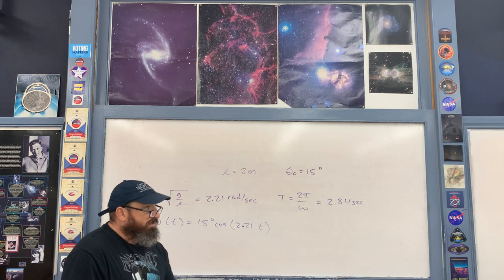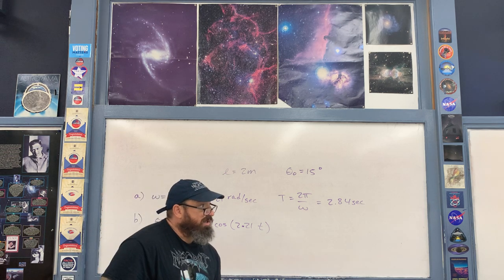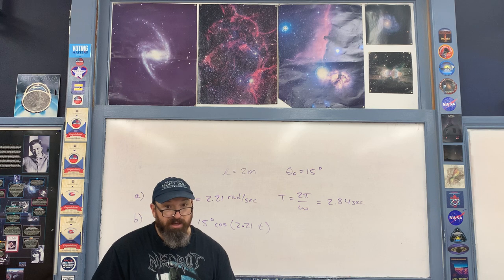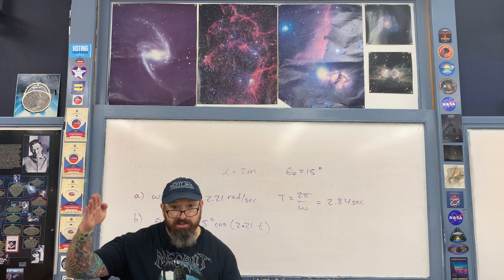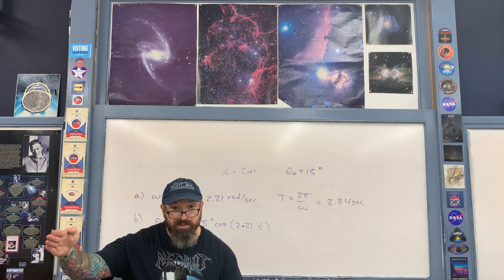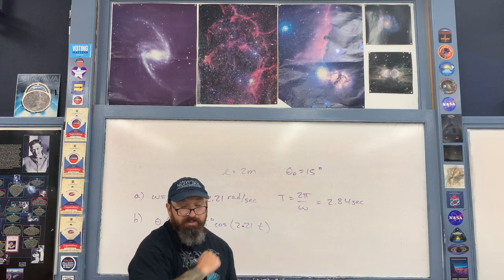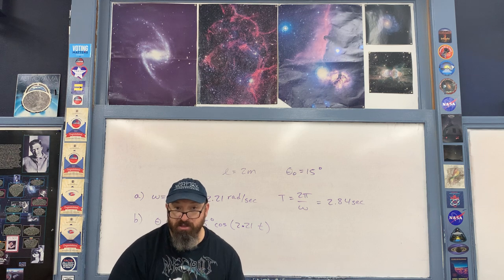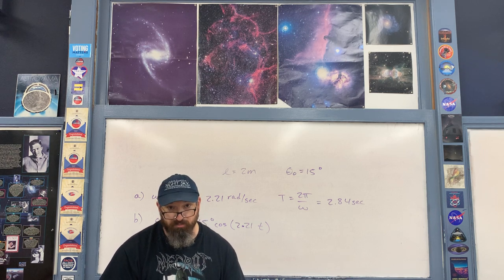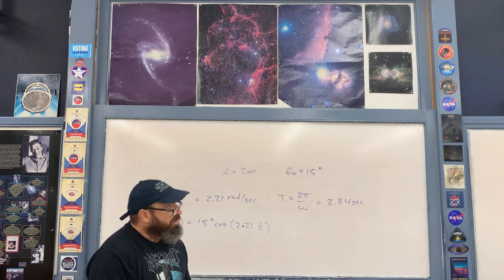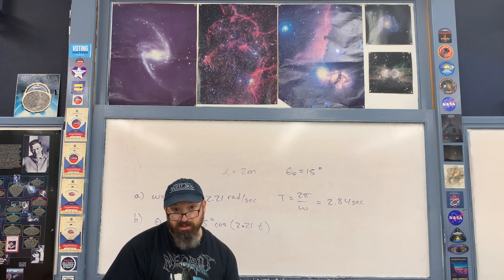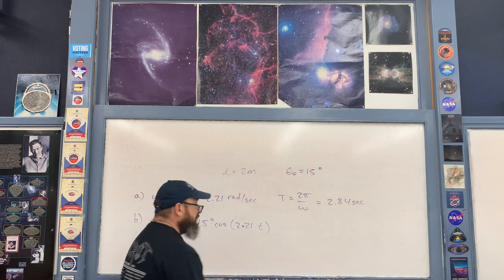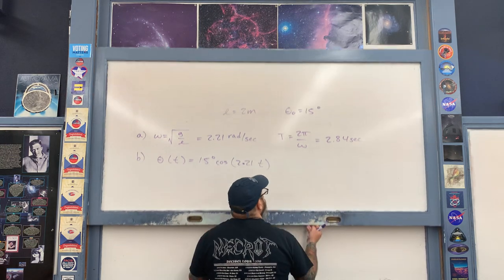In part c, we find when the string makes an angle of plus or minus 10 degrees with respect to the vertical. We actually need to calculate four times: times when the angle is +10 degrees on one side, and times when the angle is −10 degrees on the other side of the equilibrium position. Depending on how the problem is phrased, there are four such times in one period.